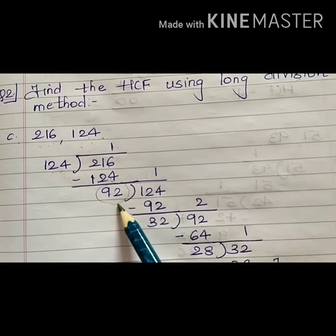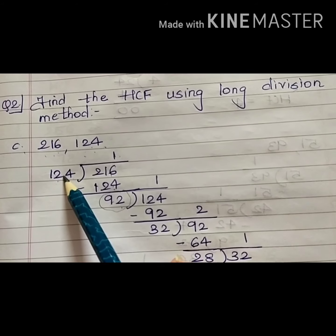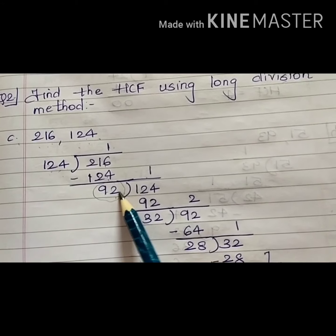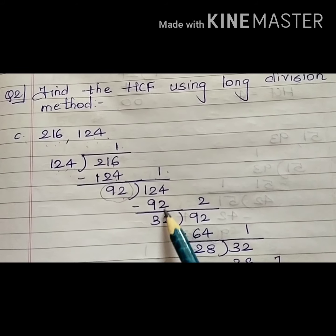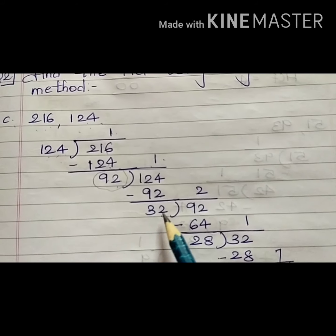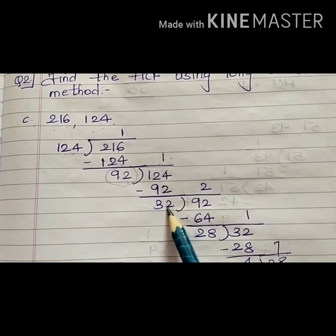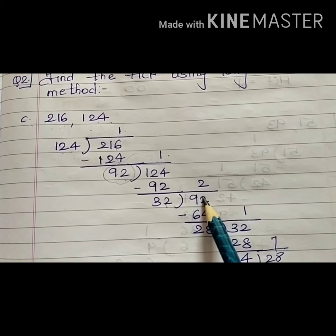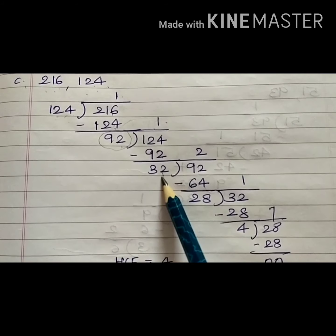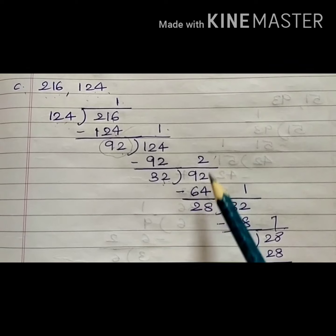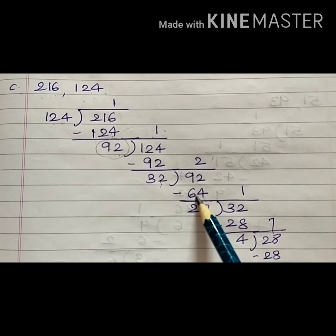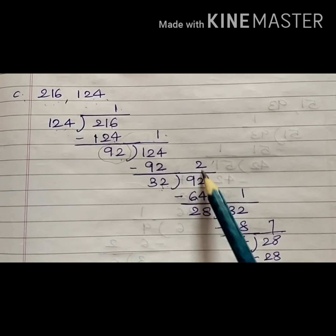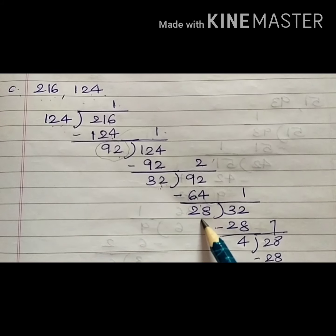This remainder, 92, will be my next divisor and the previous divisor, 124, will be my next dividend. Again carry out your division — 92 ones are 92, I get the remainder as 32. This 32 will be my next divisor. So 32 twos are 64; when I subtract I get 28.